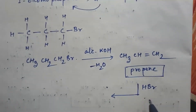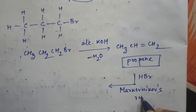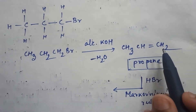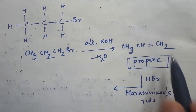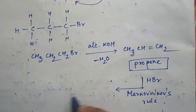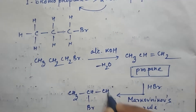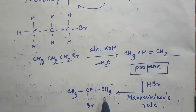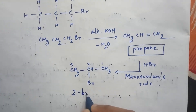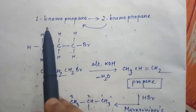Now, in propene, if we use hydrogen bromide and follow Markovnikov's rules, the hydrogen will go to that carbon atom of the double bond where the maximum number of hydrogen atoms are present, and the bromine (the negative part) will go to that carbon atom where the least number of hydrogen atoms are present. So the product will be CH3-CHBr-CH3, which by IUPAC naming is 2-bromopropane.